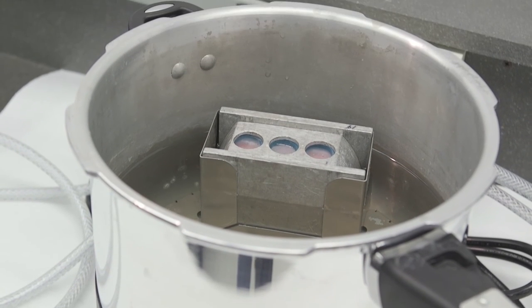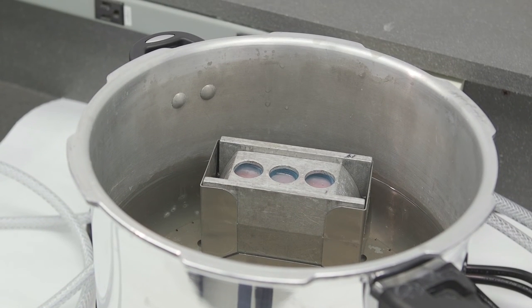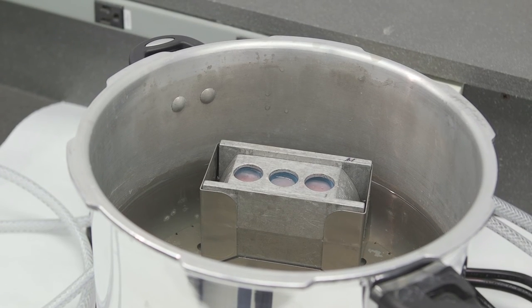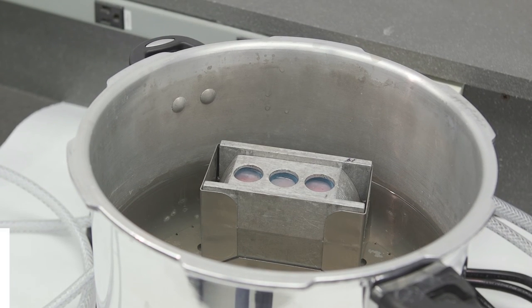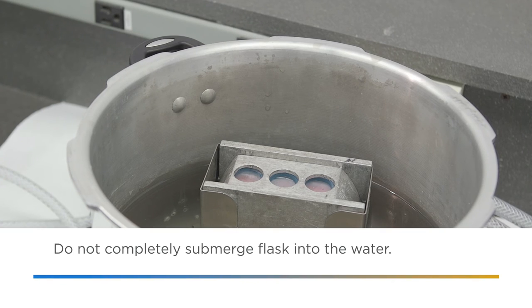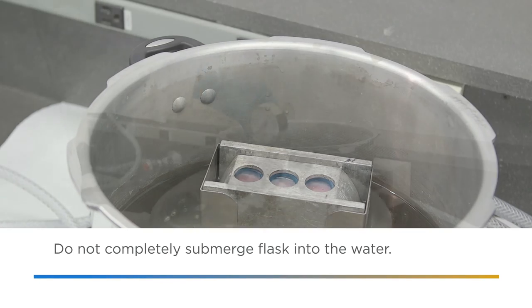Next, place the flask in the water with sprue holes upright. The water level should be below sprue height but above two-thirds the height of the flask. Be careful! Do not fully submerge the flask all the way into the water.